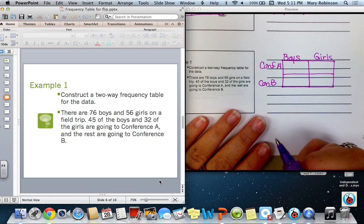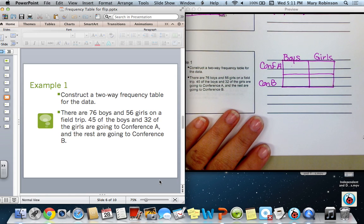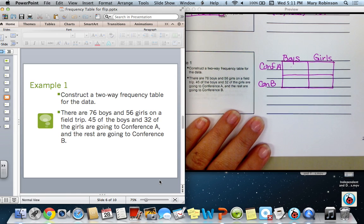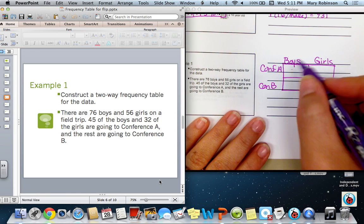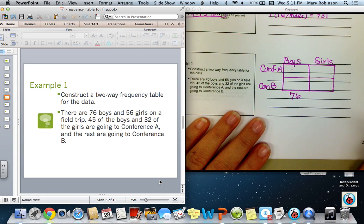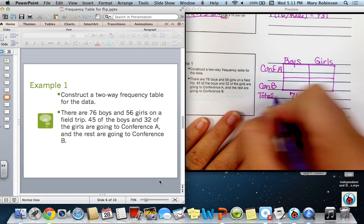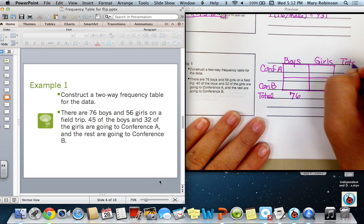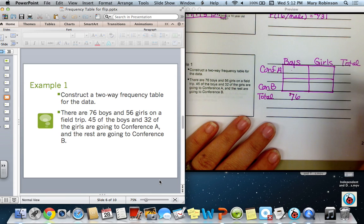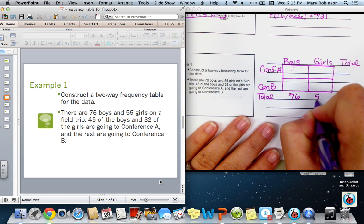So we first read the data. There are 76 boys and 56 girls on a field trip. When I read that, that tells me that I have a total of 76 boys. So because when I read I know that it's a total, I'm going to come down here and write in 76. Please remember that I told you even without being told, you need to be able to write in those total values. So there are 76 boys total and 56 girls on the field trip.